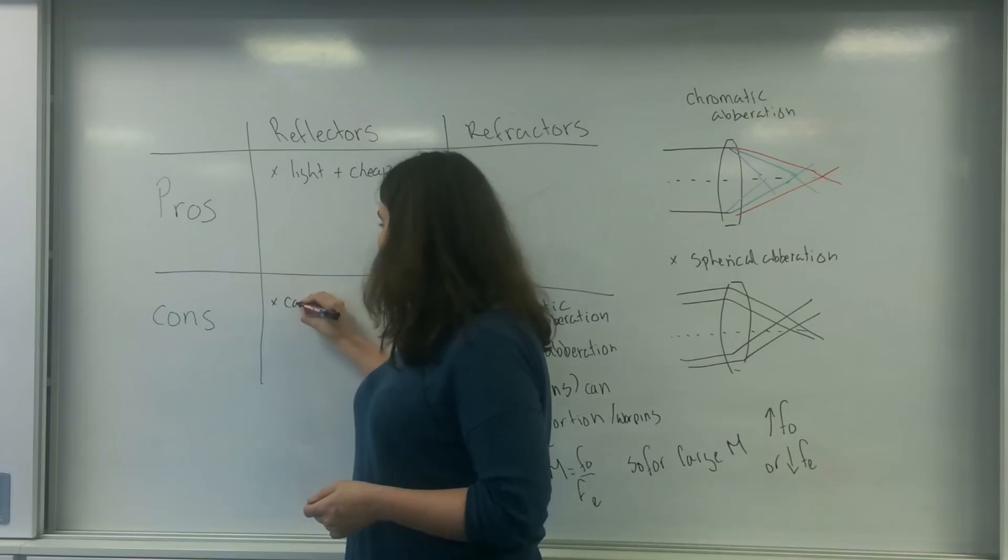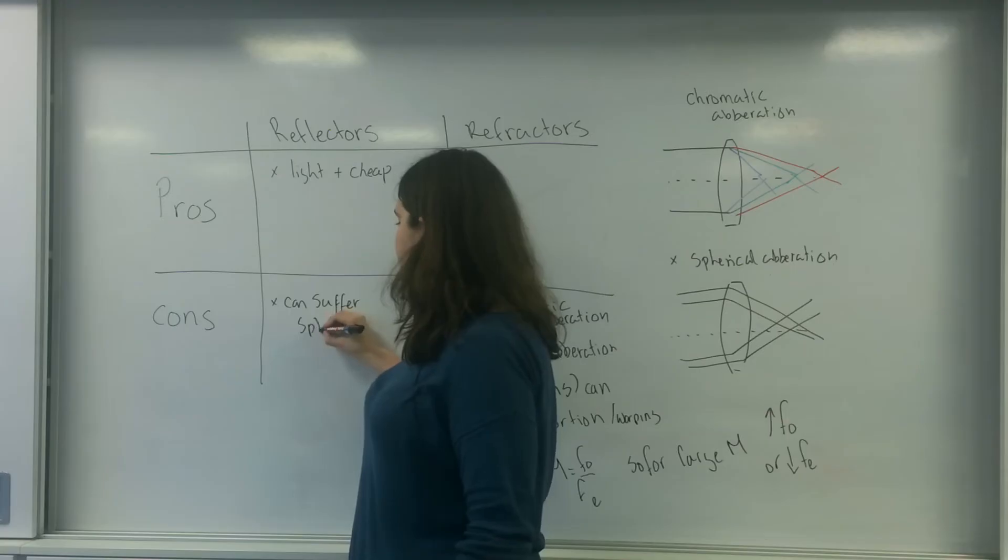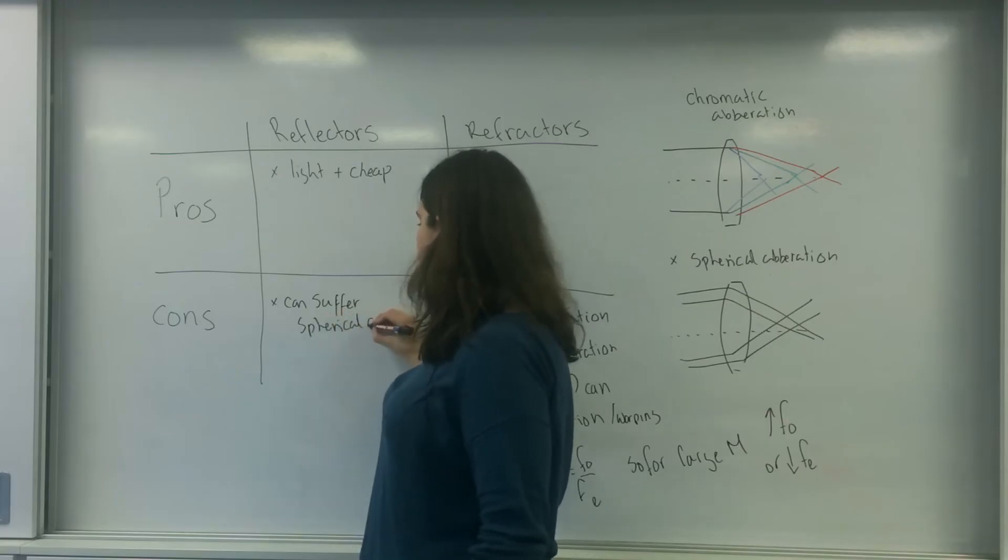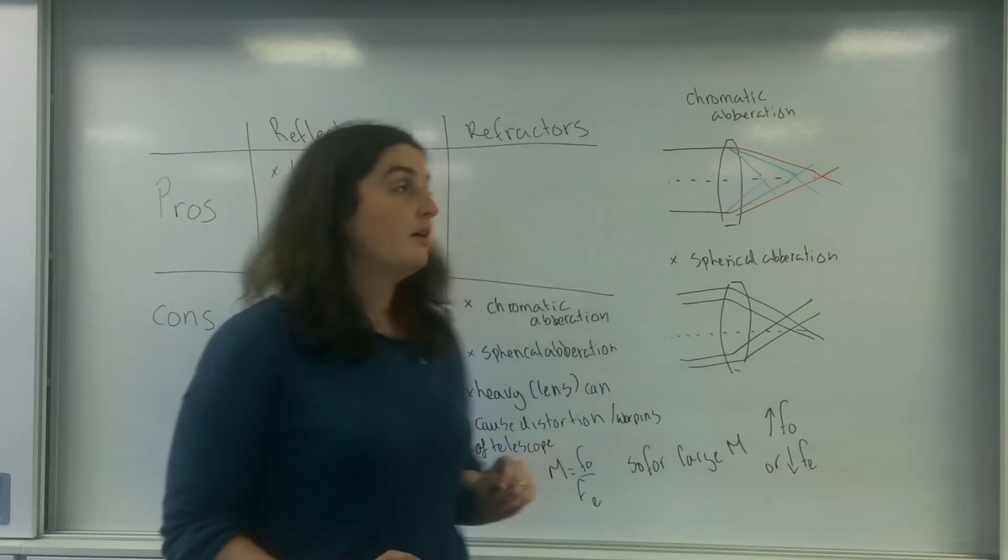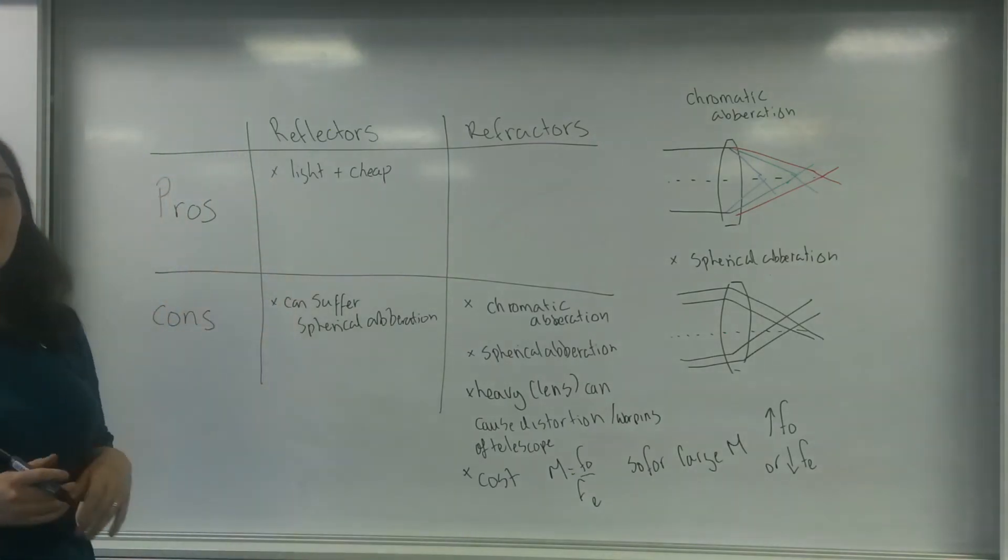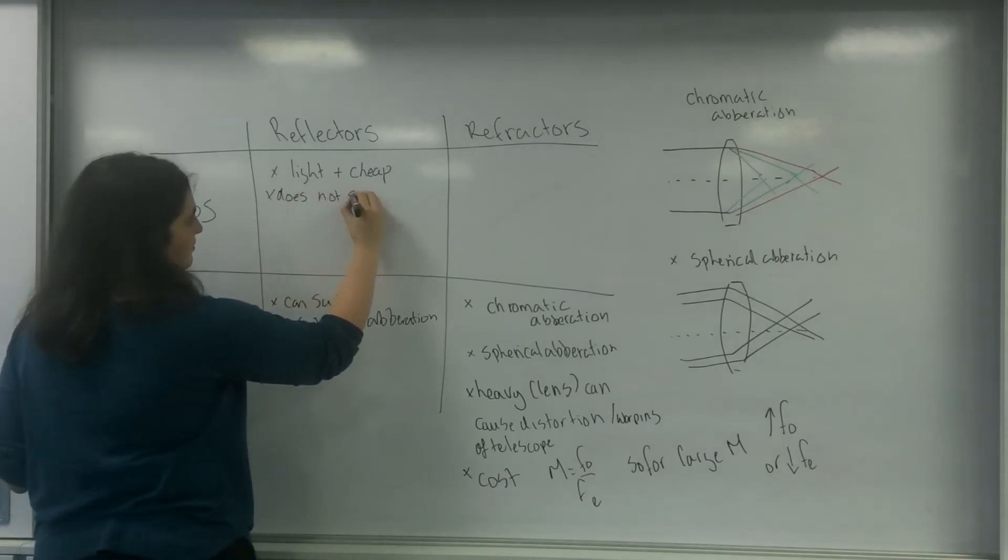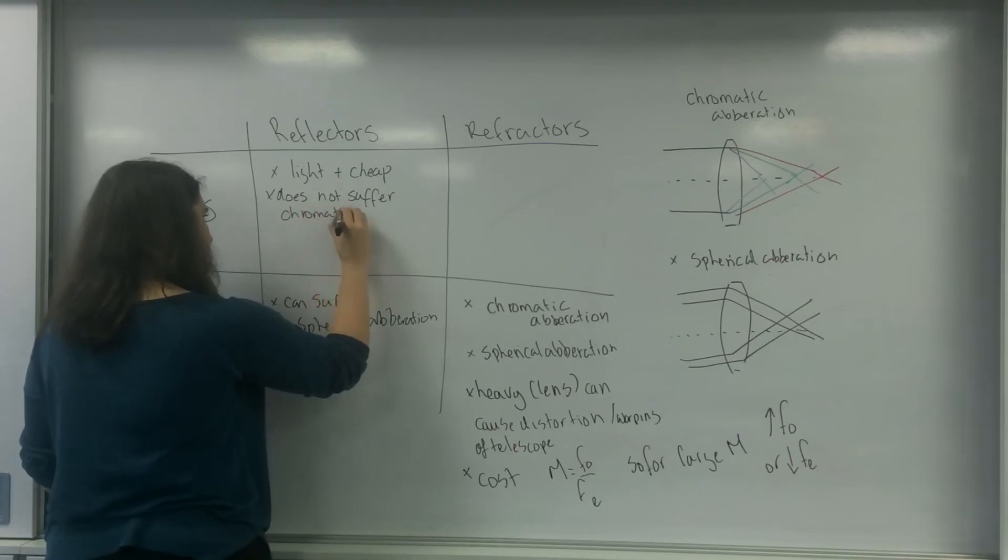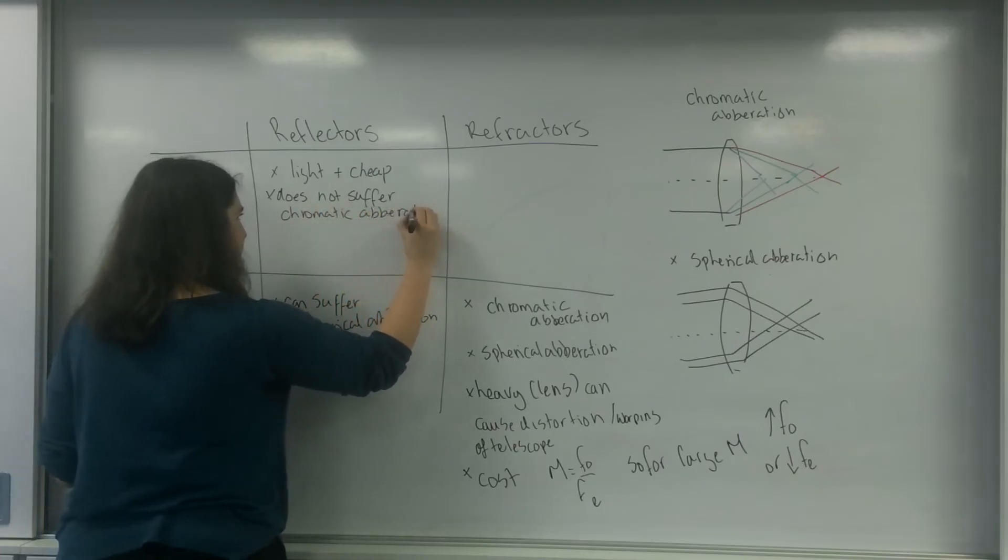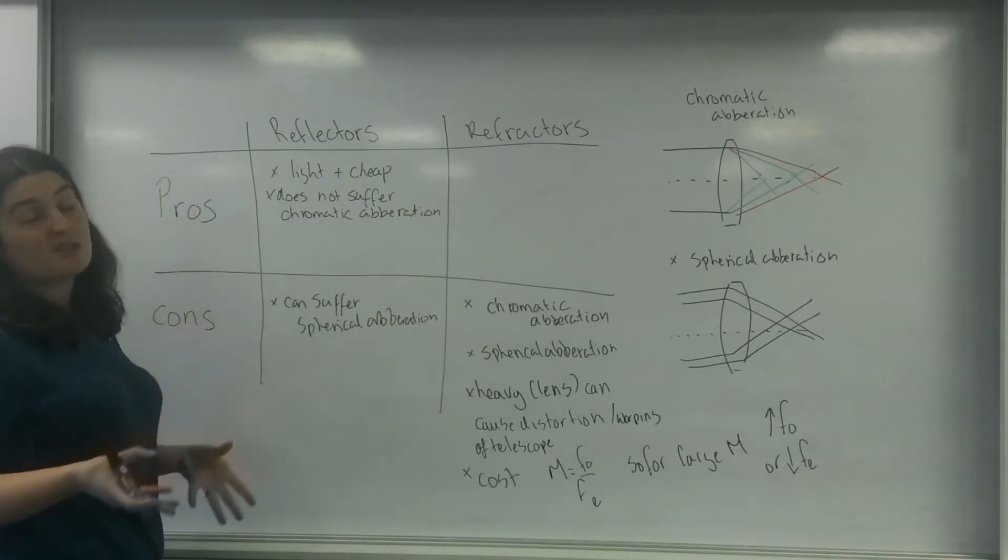As I mentioned before, a con is it can suffer spherical aberration if the mirror itself is not parabolic. So reflectors are light and cheap, do not suffer chromatic. And also because it's light, it doesn't distort. The material itself doesn't warp.